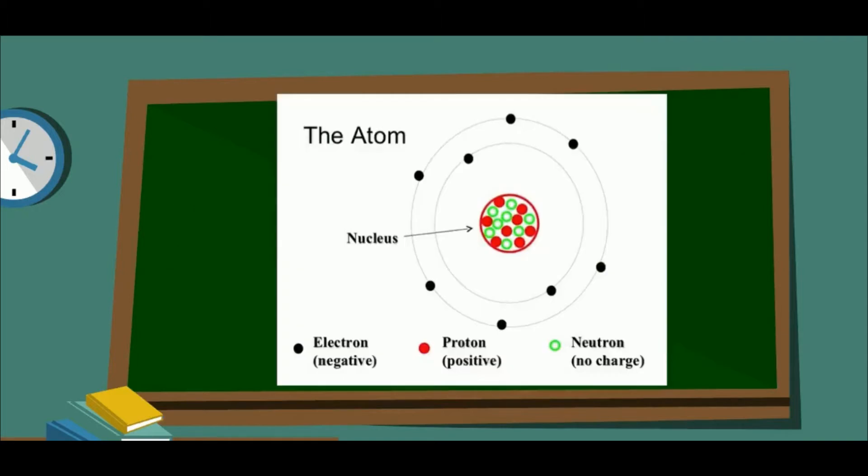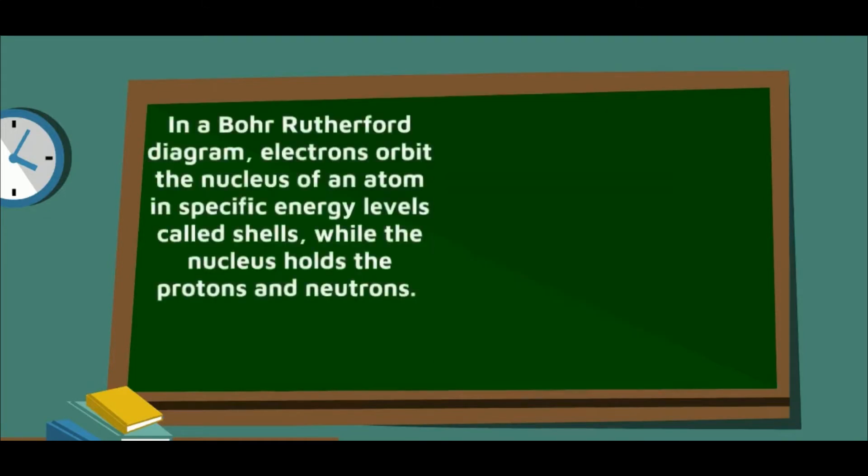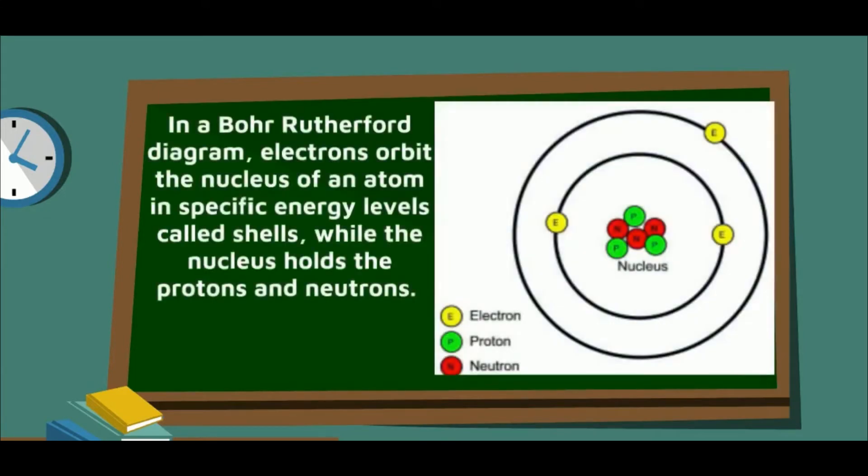Through this diagram, we can see that electrons are negatively charged, protons are positive, and neutrons are neutral. This diagram shows the location of each of the subatomic particles. Electrons orbit the nucleus, while protons and neutrons make up the nucleus.